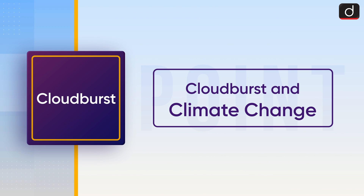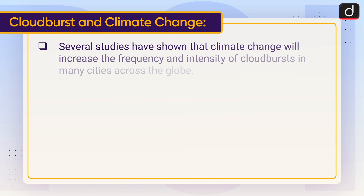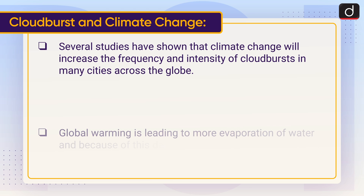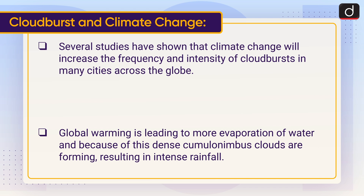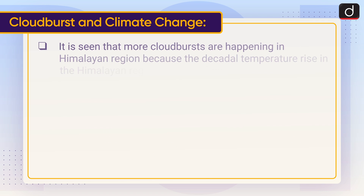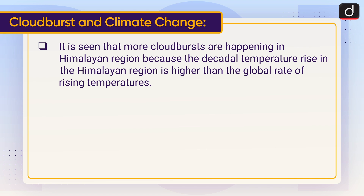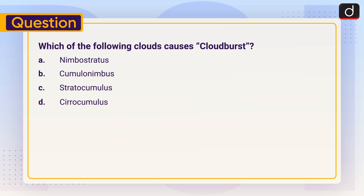Now let's discuss cloudbursts and climate change. Several studies have shown that climate change will increase the frequency and intensity of cloudbursts in many cities across the globe. Global warming is leading to more evaporation of water, causing dense cumulonimbus clouds to form and resulting in intense rainfall. More cloudbursts are happening in the Himalayan region because the decadal temperature rise there is higher than the global rate.